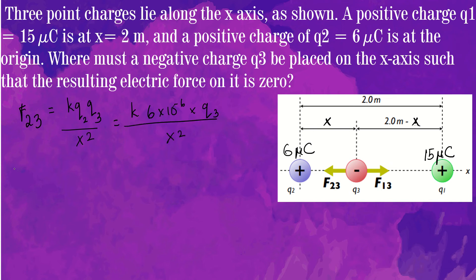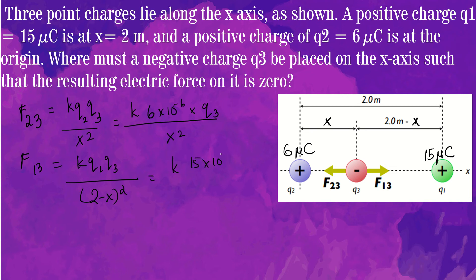Next we find F13. F13 equals k times q1 times q3 divided by (2 minus x) squared. That is k times 15 × 10⁻⁶ times q3, divided by (2 minus x) squared.